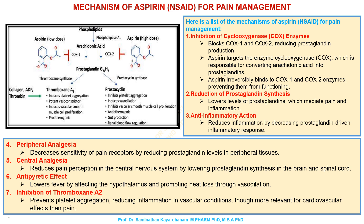6. Antipyretic effect lowers fever by affecting the hypothalamus and promoting heat loss through vasodilation. 7. Inhibition of thromboxane A2 prevents platelet aggregation, reducing inflammation in vascular conditions, though more relevant for cardiovascular effects than pain.